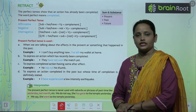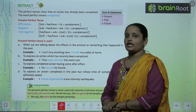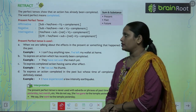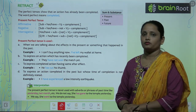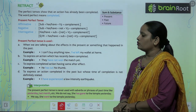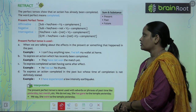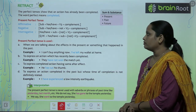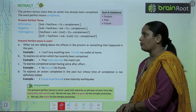First comes present perfect tense and it is divided into three parts: affirmative, negative, and interrogative. The rule of affirmative is subject plus has or have, plus verb's third form, and then complement. In the negative sentence the rule is subject plus has/have plus not plus verb's third form and then complement. For interrogative: has/have plus subject plus not plus verb's third form plus complement. For question words: question word plus has/have plus subject plus not plus verb's third form and then complement.